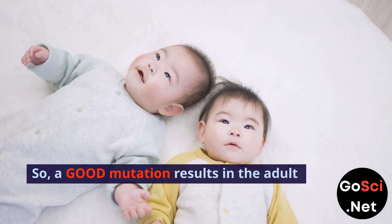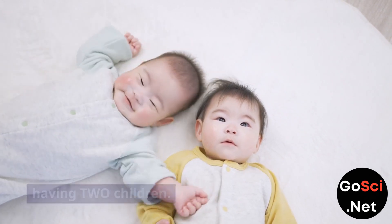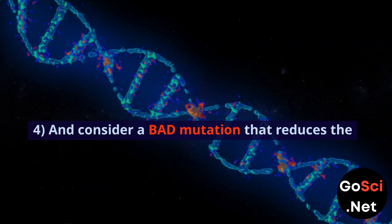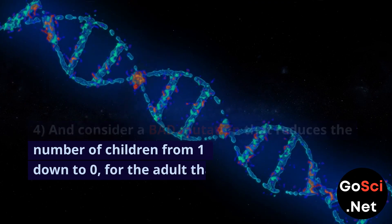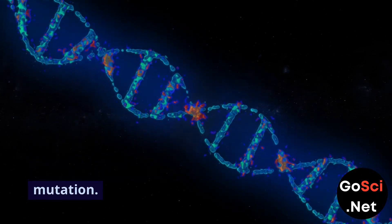So a good mutation results in the adult having two children. And consider a bad mutation that reduces the number of children from 1 down to 0 for the adult that has that mutation.